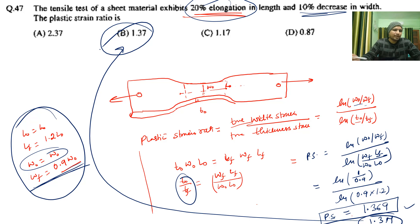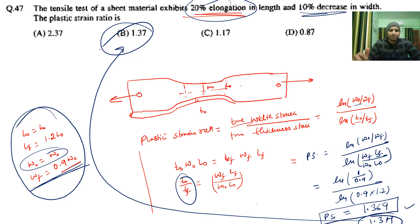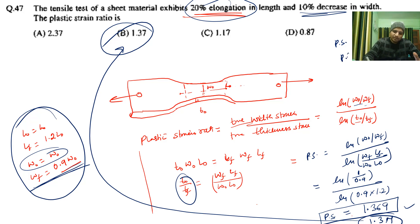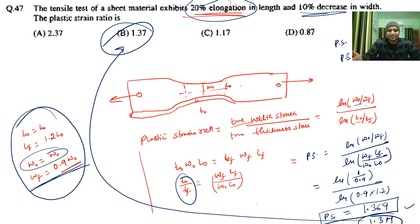So the plastic strain ratio R ≈ 1.37. This means the strain in the width direction is greater than the strain in the thickness direction. If R > 1, the sheet is resistant to thinning; if R < 1, the strain in the thickness direction is greater and the sheet is more prone to thinning. Hope this helps with your preparation. Thank you.